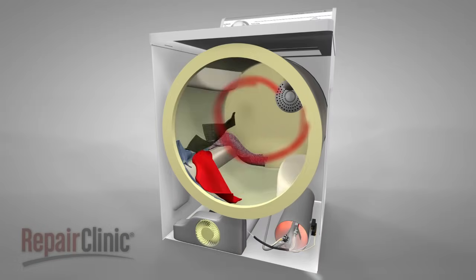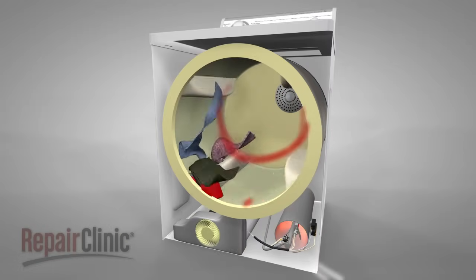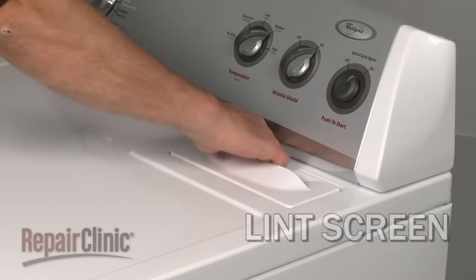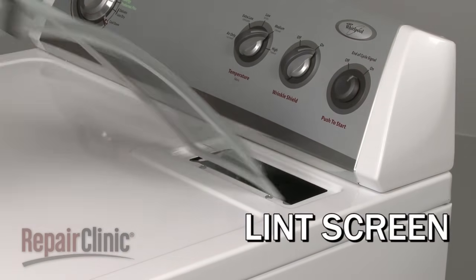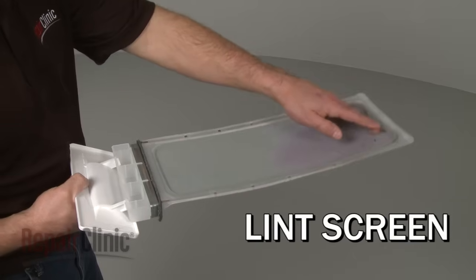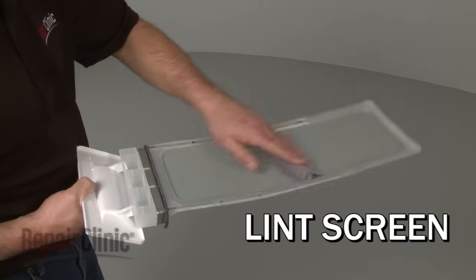If functioning properly, the heated air is pulled evenly through the tumbling clothes and then through a lint screen. To maintain proper air flow, it's important to clean the lint screen after each load.